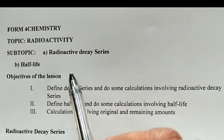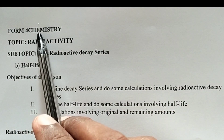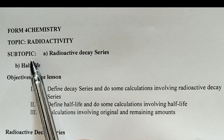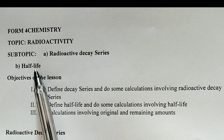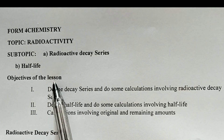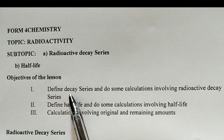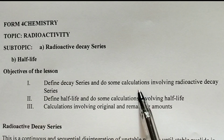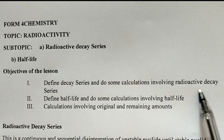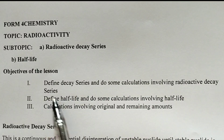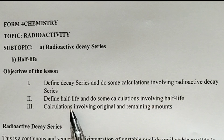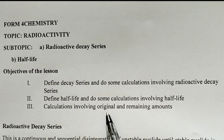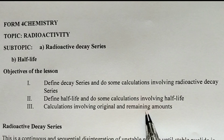Welcome to our channel. In this lesson I want us to discuss Form 4 chemistry, topic radioactivity, subtopic number 1: radioactive decay series, and number 2: half-life. The objectives of the lesson are: number 1, to know the definition of decay series and be able to do calculations involving radioactive decay series; number 2, to define half-life and do calculations involving half-life; number 3, to calculate original amount and remaining amount when given half-life and total time taken.